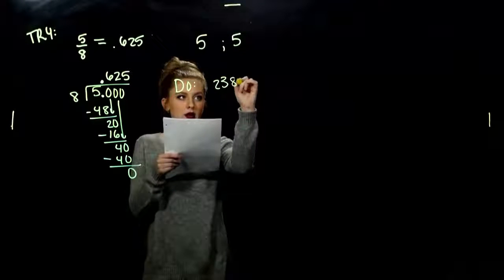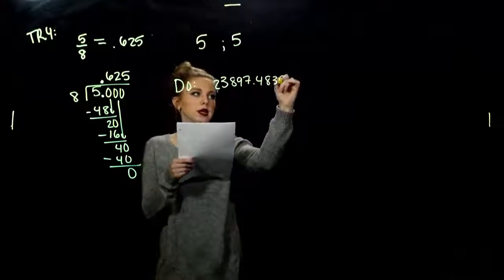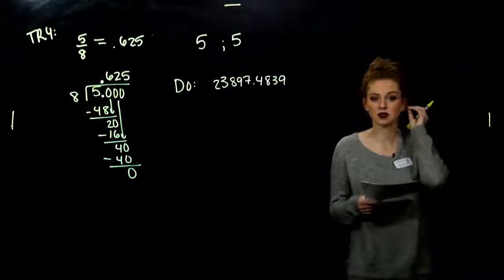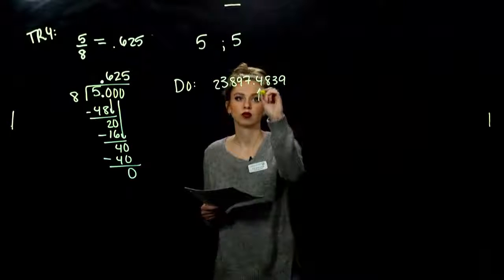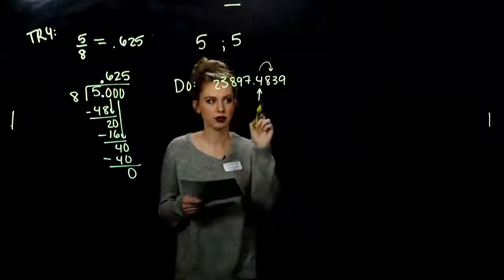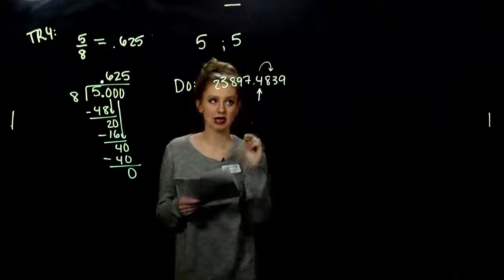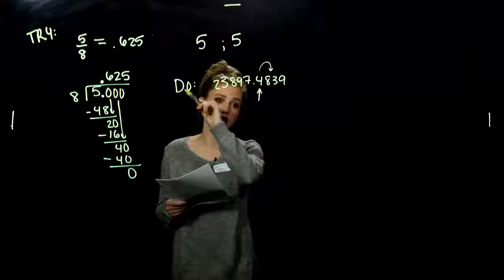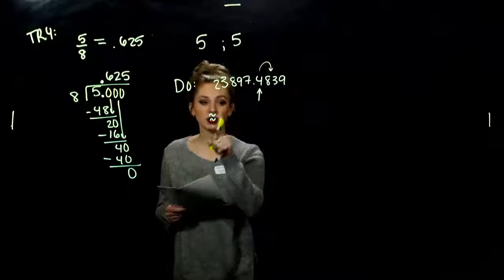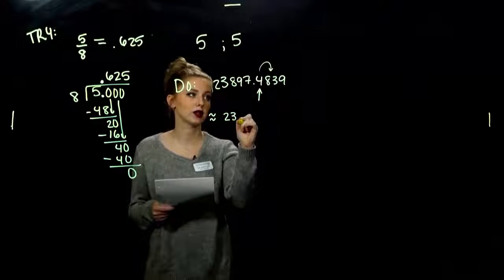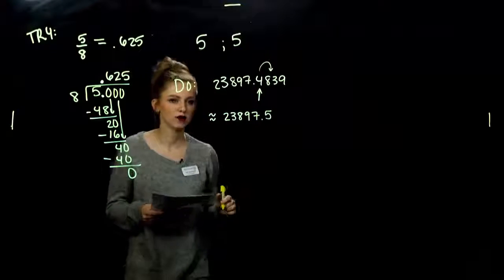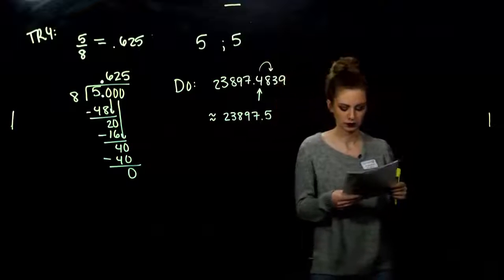For example: 23,897.4839 — we want to round that to the nearest tenth. First we need to find the tenths place, which is right there. We consider the thing to the right of it, which is 8. Is 8 bigger than 5? Yes, so we need to round up. My 4 becomes a 5. So approximately — since we're rounding it's not exactly equal to, because we're cutting off a significant value of the number — it rounds to 23,897.5.